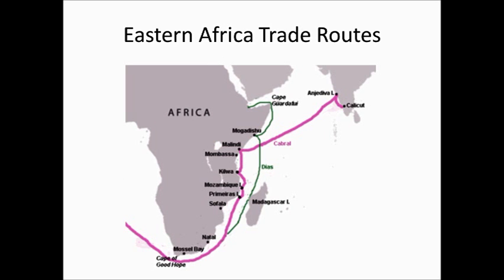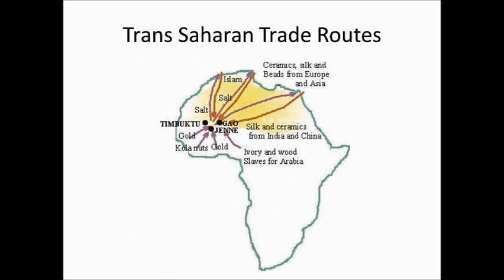East African trade routes are going to play a major part in developing the culture of the east coast of Africa. You're going to get a mixture of Bantu — their base language — and Arabic. The religion of Islam is going to come in there, making these very culturally diverse areas. The trade was based on the monsoon winds: the winter monsoon came out of the northeast, taking you back to Africa, and the summer monsoon came out of the southwest, taking you to India.